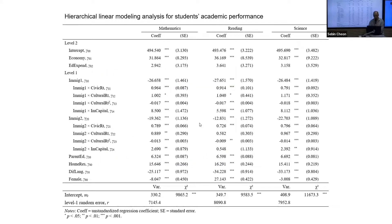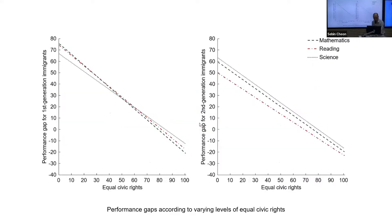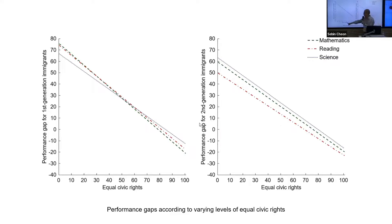Looking at the visualization of results: this graph shows performance gaps according to varying levels of equal civic rights. There is a negative correlation — as equal civic rights increases in terms of policy, the performance gap between immigrant-background students and their non-immigrant peers decreases. This means inclusionary civic rights may be an important policy strategy, and the pattern here is quite straightforward.